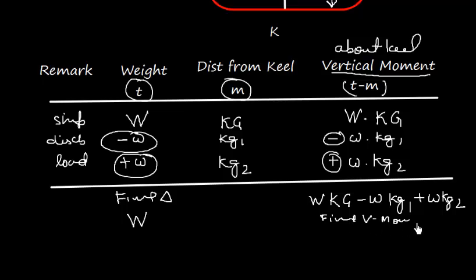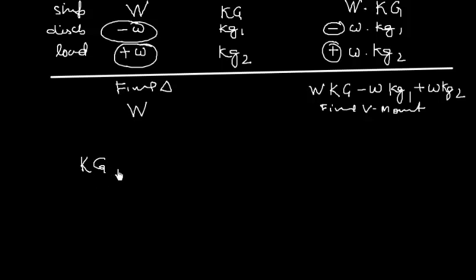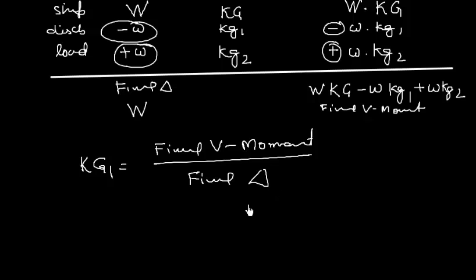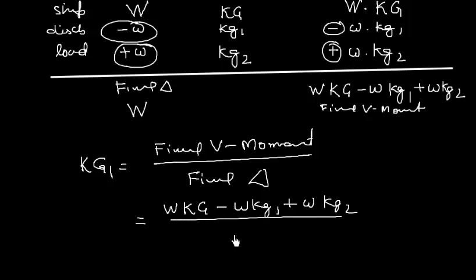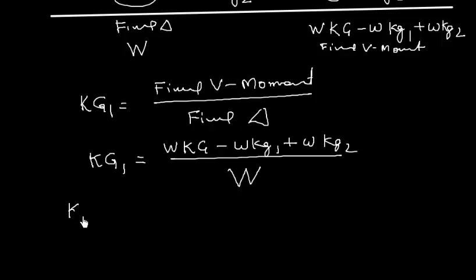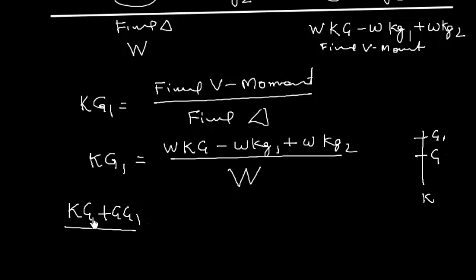The new final KG, which I call KG1, equals the final vertical moment divided by the final displacement: KG1 = (W·KG − w·KG1 + w·KG2) / W. We know that KG1 is nothing but KG plus GG1, where KG is the original distance from keel to G and GG1 is the upward shift of the center of gravity.